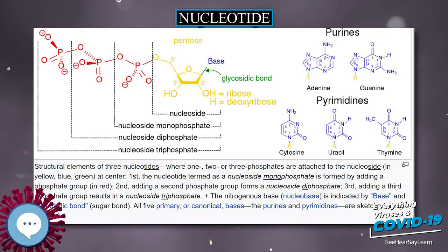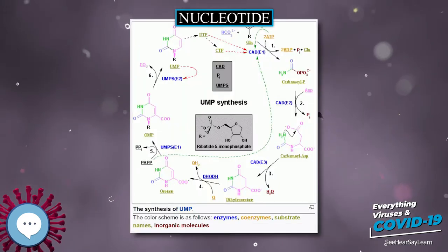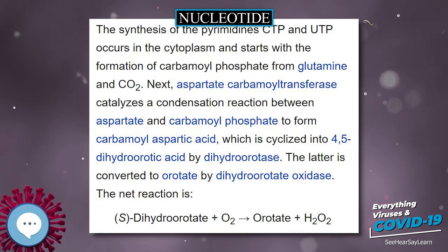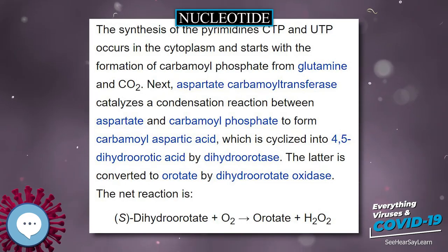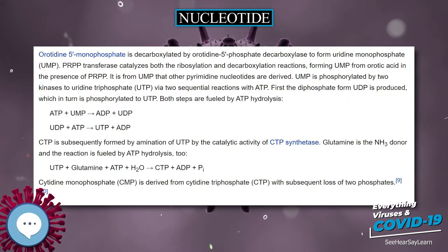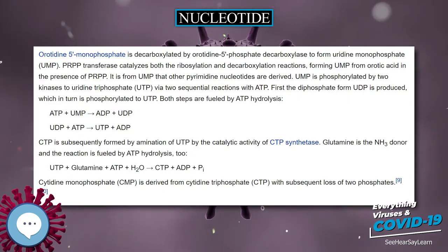Nucleotides are the building blocks of nucleic acids. They are composed of three subunit molecules: a nitrogenous base (also known as a nucleobase), a five-carbon sugar (ribose or deoxyribose), and at least one phosphate group. The four nitrogenous bases present in DNA are guanine, adenine, cytosine, and thymine. In RNA, uracil is used in place of thymine.